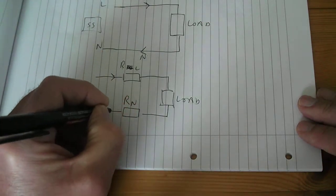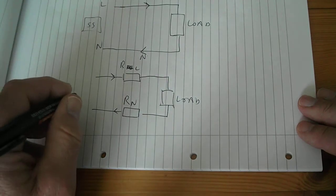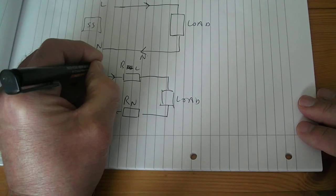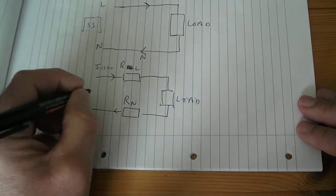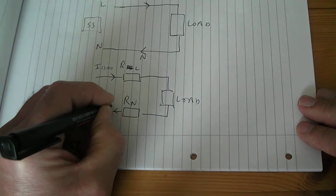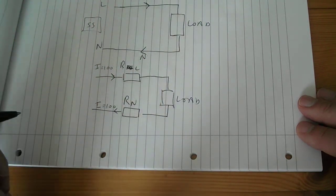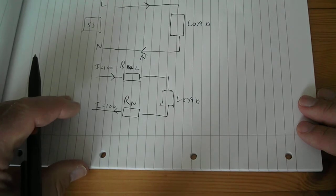But if I know there's 100 amps going through there and 100 amps going through this one, I equals 100, I equals 100. And we know that in a series circuit the current remains the same all the way through.